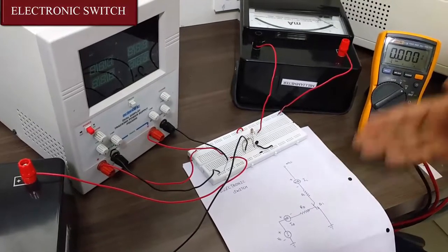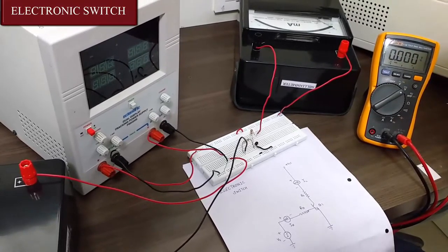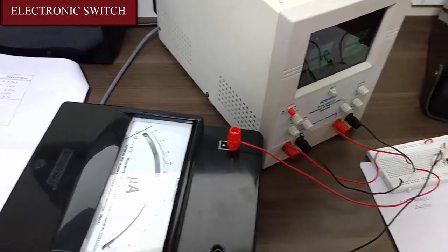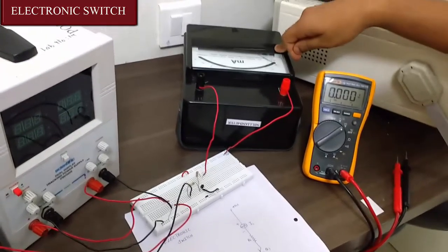This is how this circuit is implemented on breadboard. We have two ammeters. The first micro ammeter gives us the input current IB and this milli ammeter gives us the current IC.